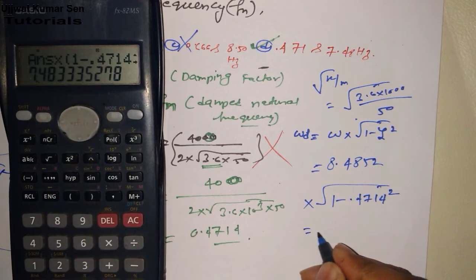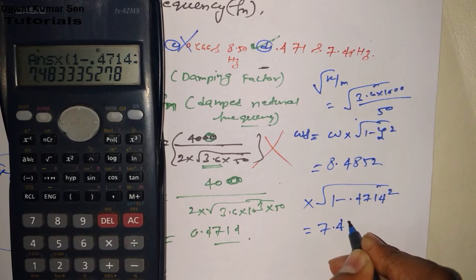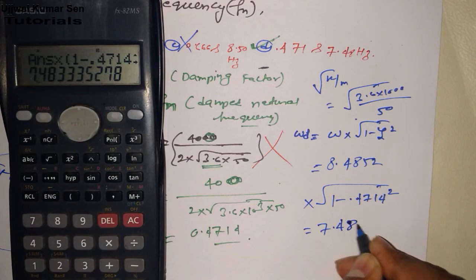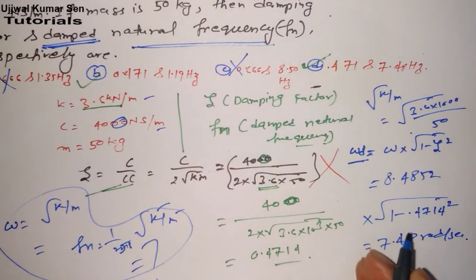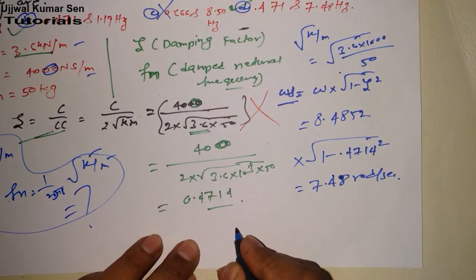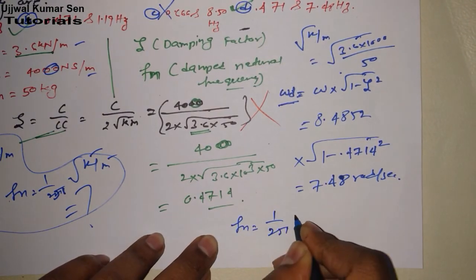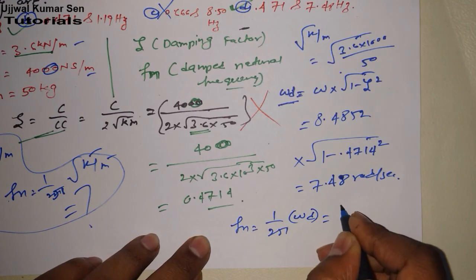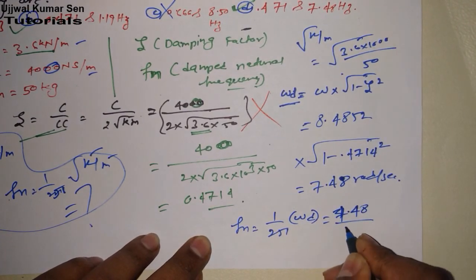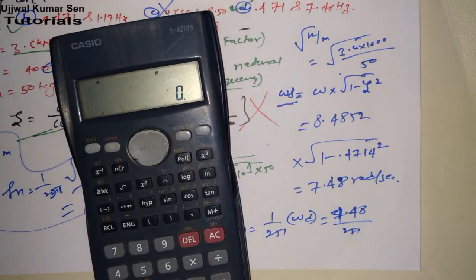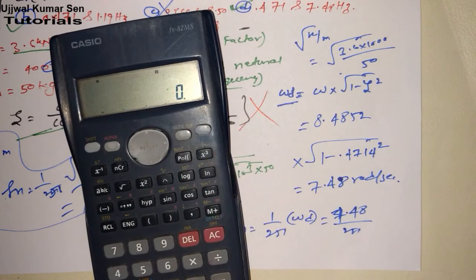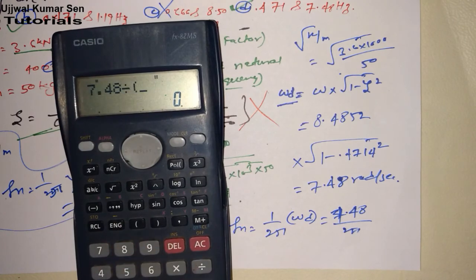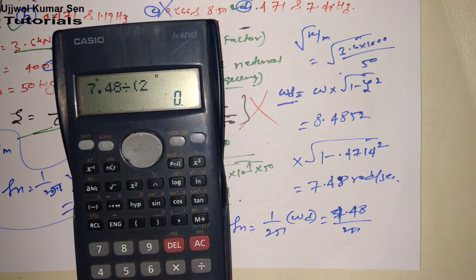So what is the value we are getting? 7.48 radian per second. But again this is a circular frequency. We have to find out natural frequency. Therefore what is it? fn is equal to (1/2π) × ωd. So we have to divide this 7.48 divided by 2π. 7.48 divided 2 multiple pi. So what is the value exactly we are getting?